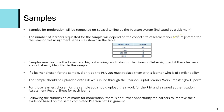However, samples must include the lowest and highest scoring candidates for the Pearson Set Assignment if those learners are not already identified in the sample. For example, if you had a sample of 10 selected and the highest and lowest marked candidates didn't appear in that list, you should also upload them, so a total of 12 learners will actually be uploaded.